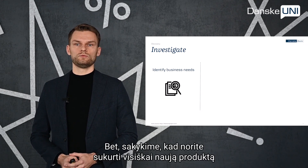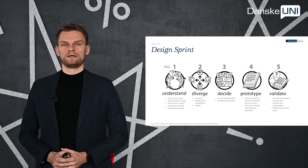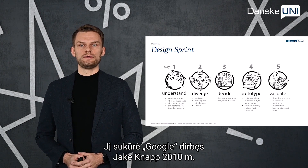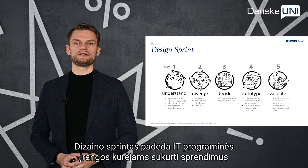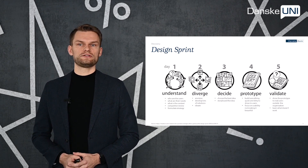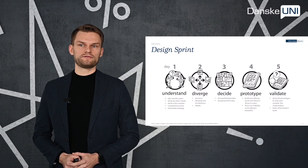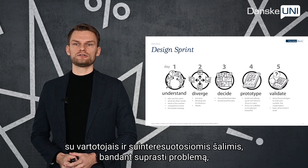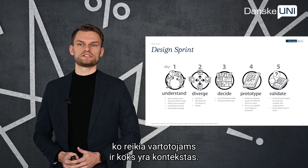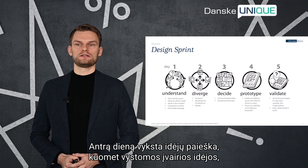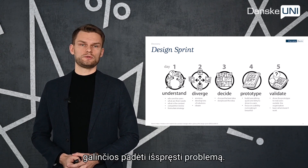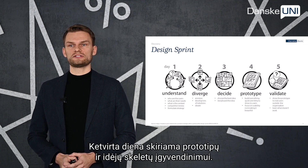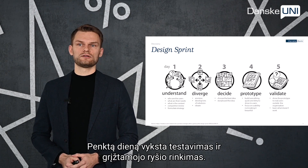Let's say you have a situation where you want to build a brand new product and a design sprint is needed. Design sprint is a five-day structured brainstorm based on design thinking and Agile development, created by Jake Knapp at Google in 2010. It helps software development teams to build a low-fidelity solution in just five days. Day one is mostly dedicated to interviews and meetings with users or stakeholders to understand the real problem, user needs, and context. Day two is when brainstorming takes place and a lot of ideas are created and sketched. During day three, the team decides on the best idea and usually starts prototyping. Day four is dedicated mostly to prototyping and building a walking skeleton of the solution.